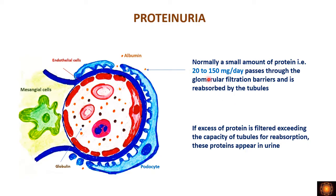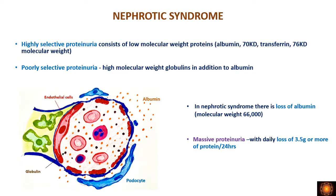Normally only very minute traces of protein are lost and reabsorbed, so there is no net protein loss. There are two types of proteinuria: highly selective proteinuria, where only low molecular weight proteins like albumin and transferrin are lost; and poorly selective proteinuria, where high molecular weight globulins are also lost along with low molecular weight proteins. In nephrotic syndrome we have selective proteinuria — only albumin is lost, not globulins — and it is massive, with a daily loss of 3.5 grams or more per 24 hours.